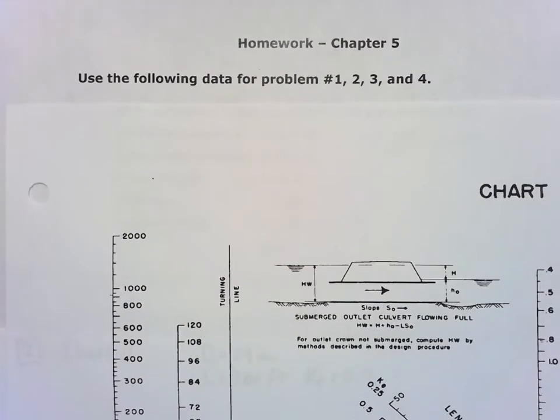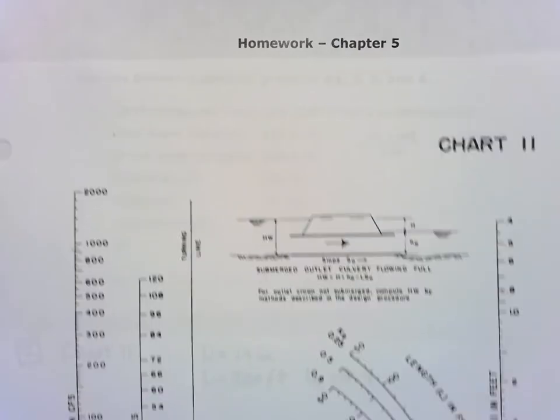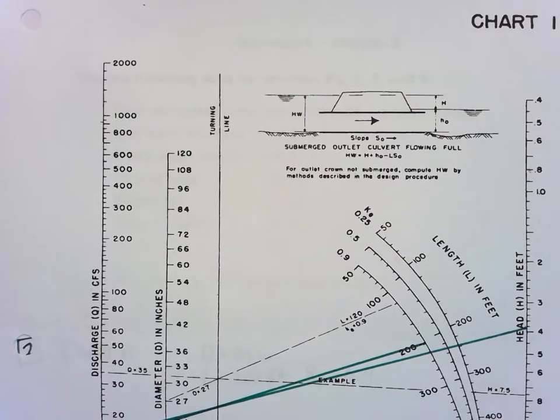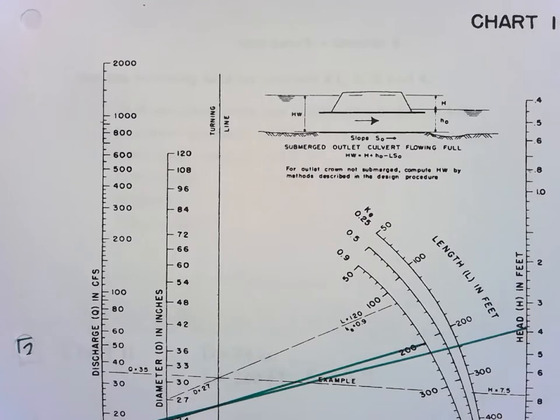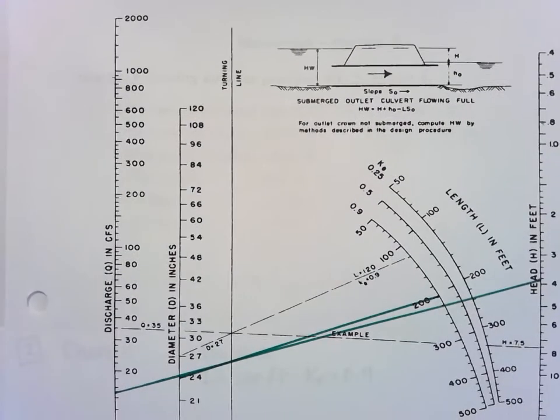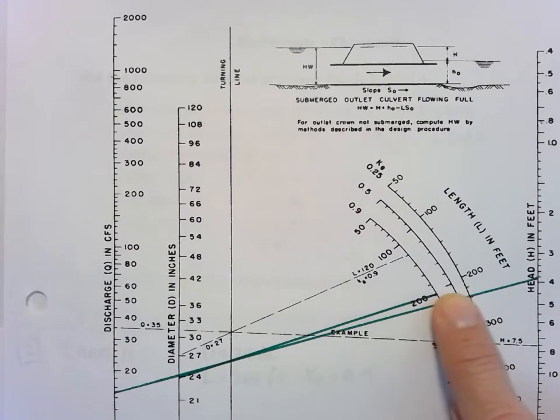So I went ahead and drew this already on Chart 11. We start here with the 24 inch diameter and connect it up to the 200—so it's the top line here, that 200 foot length on the Ke equals 0.9.